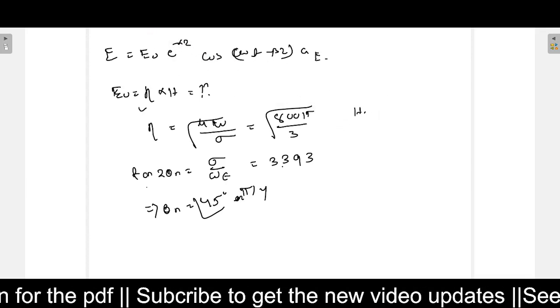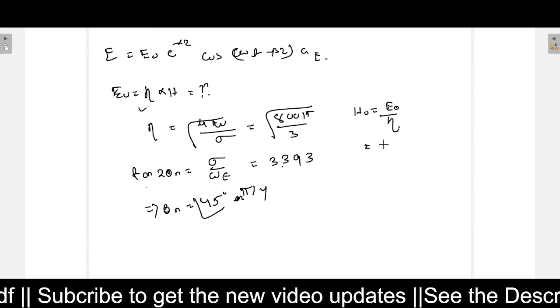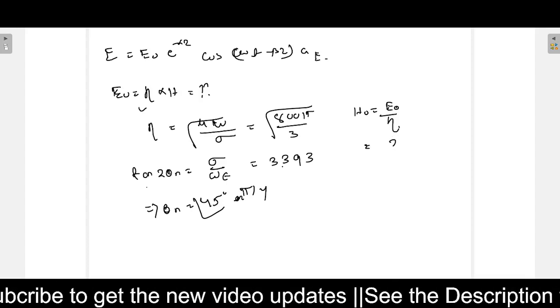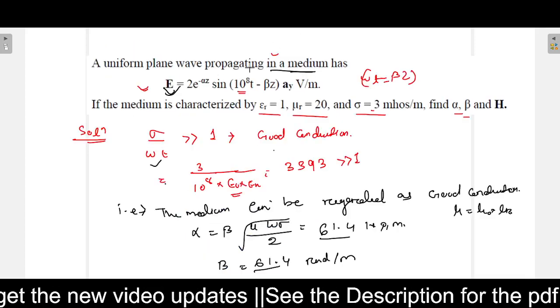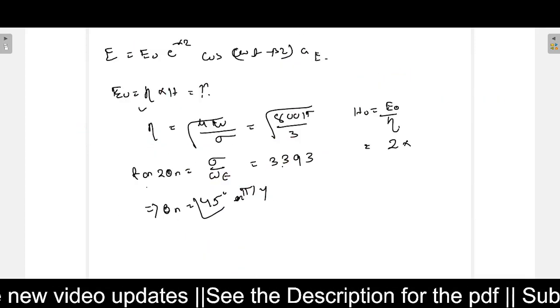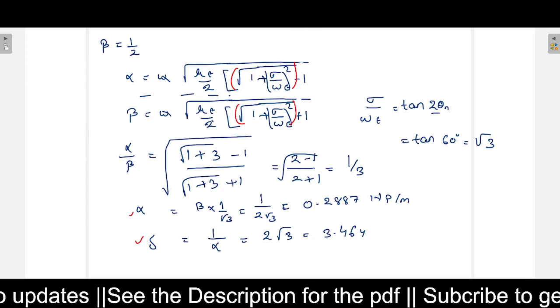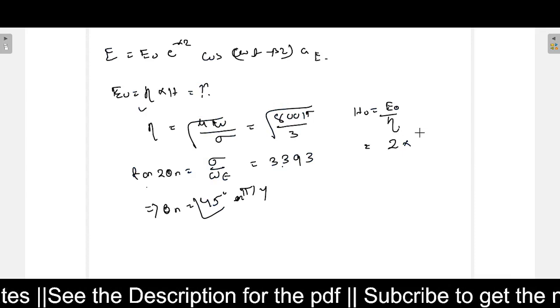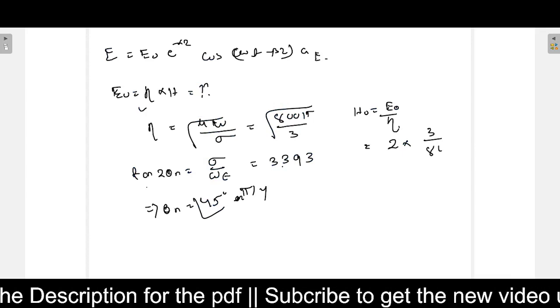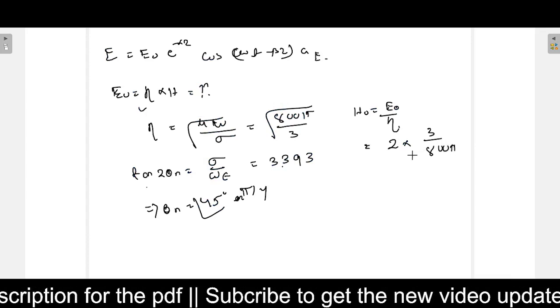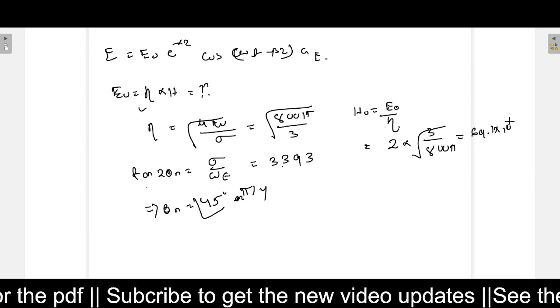So now H_naught will be how much? H_naught equals E_naught divided by eta from this formula. That will be... E is given as 2 here, you can see. It is amplitude E_naught is given 2 here. So 2 into, and eta value we have to take, 3 divided by 800*pi. That equals 69.1 × 10^-3.